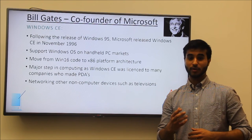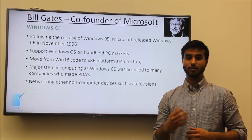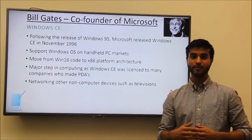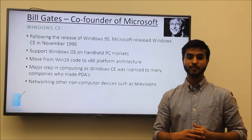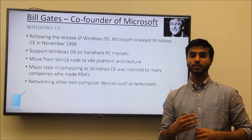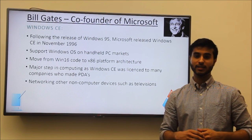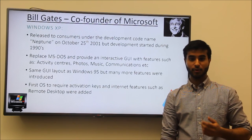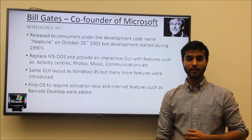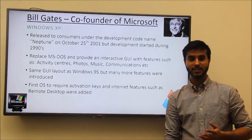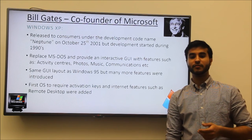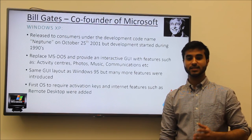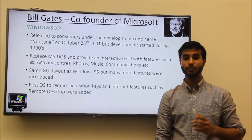Original equipment manufacturers could license and modify the software. This was popular for business devices such as PDAs running early versions of Windows CE. Later mobile OSs were configured off the base of the software, such as AutoPC, PocketPC, PocketPC 2000 and 2002, Windows Mobile 2003 and all later iterations of Windows Mobile. Other non-computer devices such as televisions also used Windows CE for networking capabilities. XP was developed in the early stages of the 1990s but was only released to the market in October 2001. The interactive GUI was based off Windows 95 but included added features for activity centers, photos, music and communications. This was the first iteration of a Windows OS that required an activation key. XP set the standards for businesses and included major advances in Internet-capable features such as remote desktop and communicator.